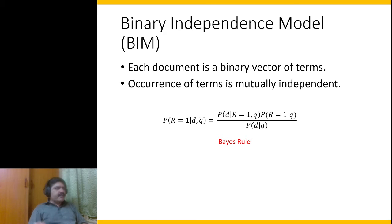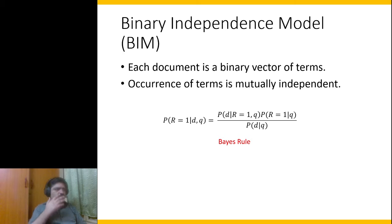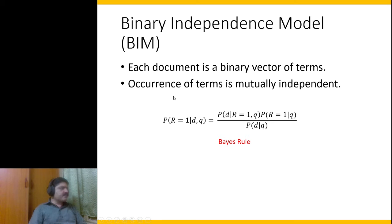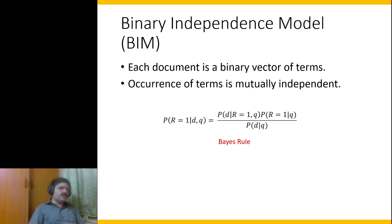Let me introduce the Binary Independence Model. It makes two assumptions: first, each document is a binary vector of terms — either a term exists or it does not exist in the document. Second, the occurrence of terms is mutually independent. This allows us to keep the model simple and compute relevance scores much more easily.